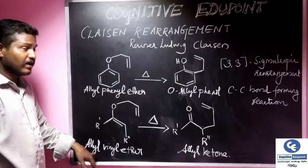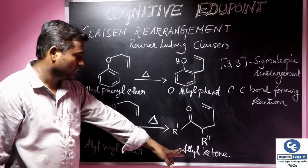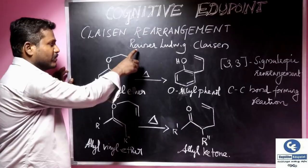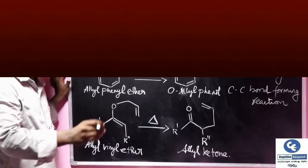Another example for Claisen's rearrangement is when allyl vinyl ethers are heated, they rearrange to give us allyl ketones. This is mainly due to this arrangement. This can give us the cyclic intermediate, which we will see in detail in the mechanism.